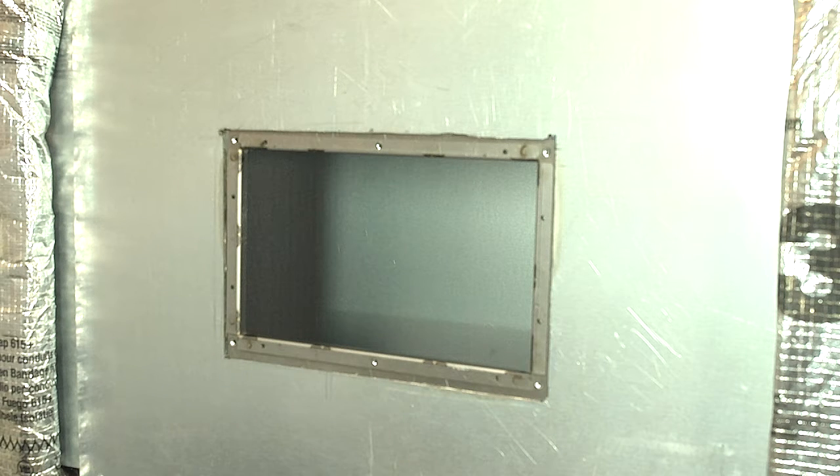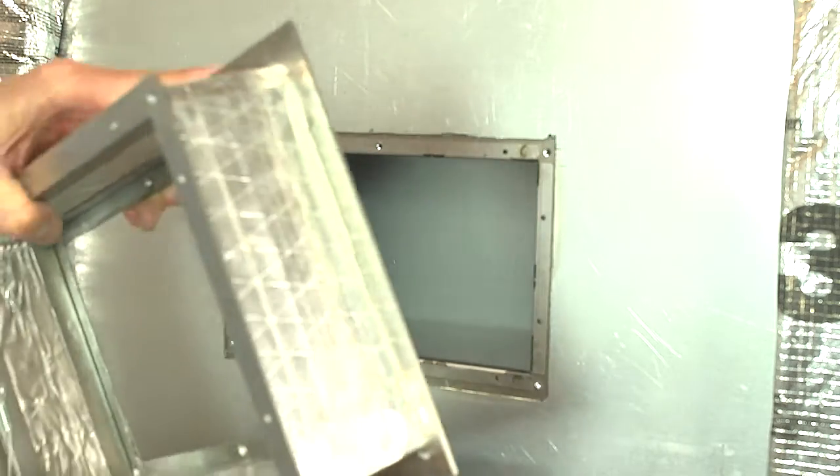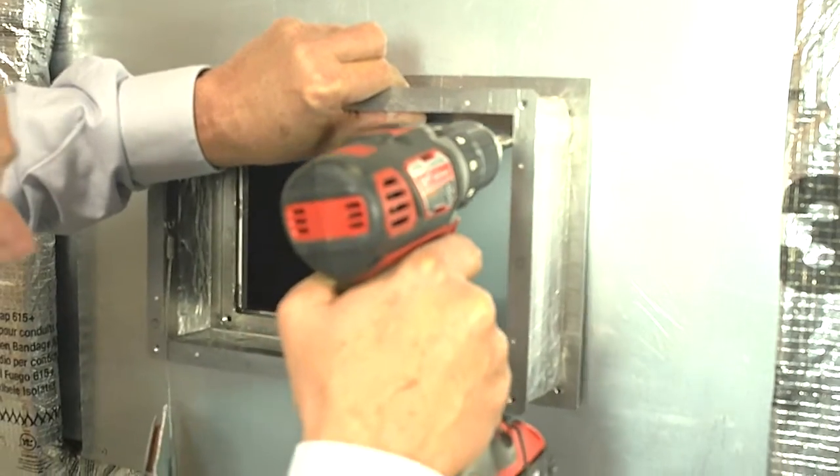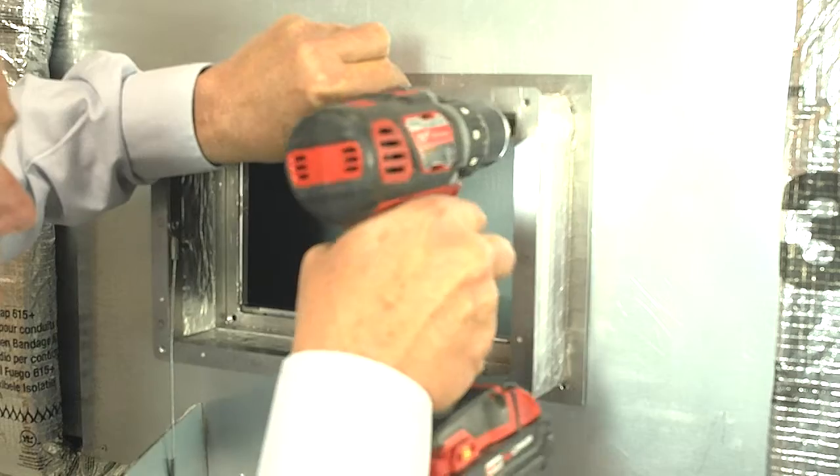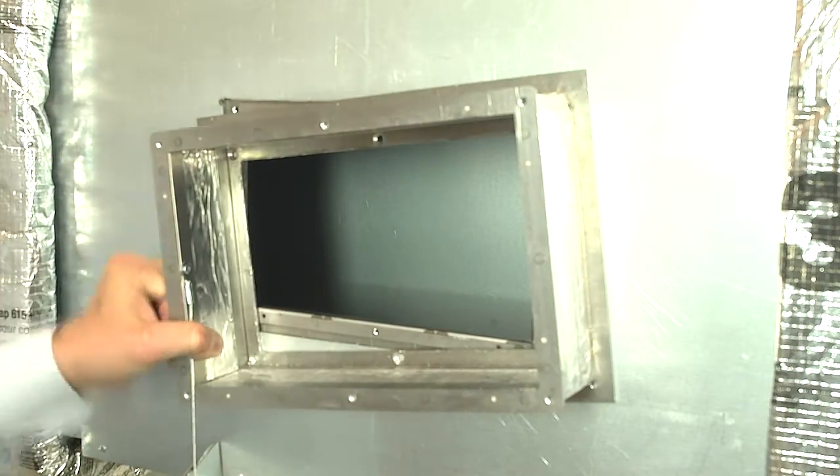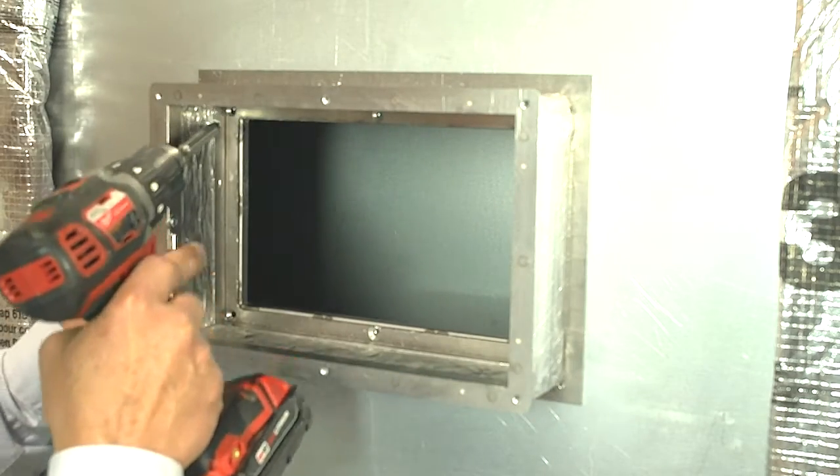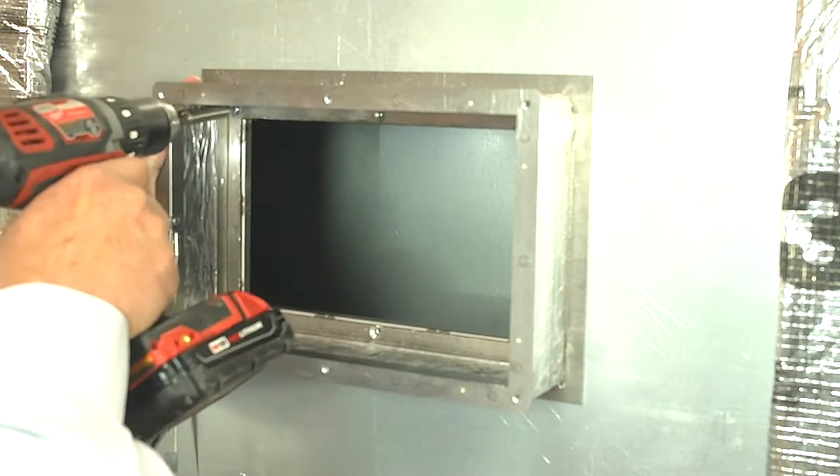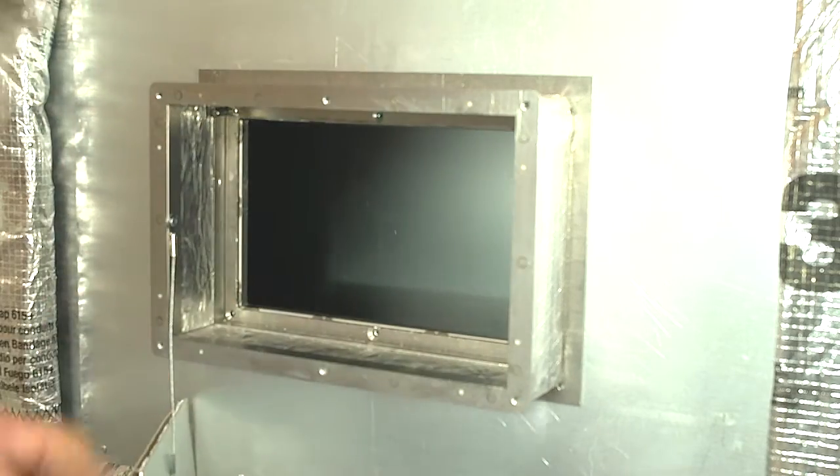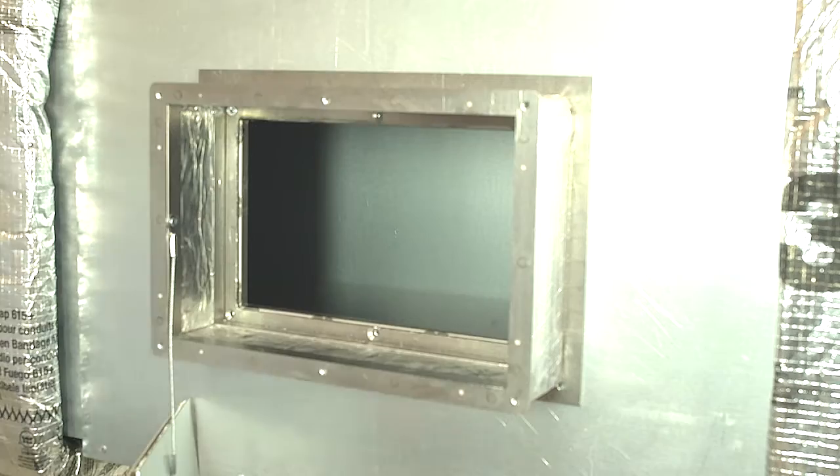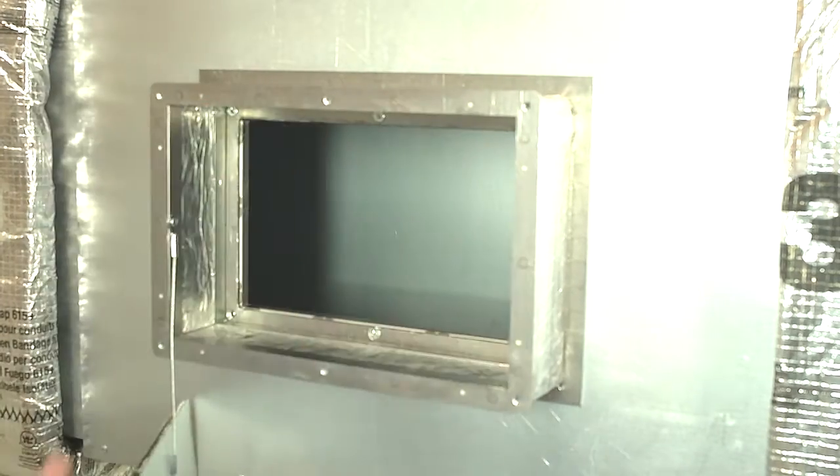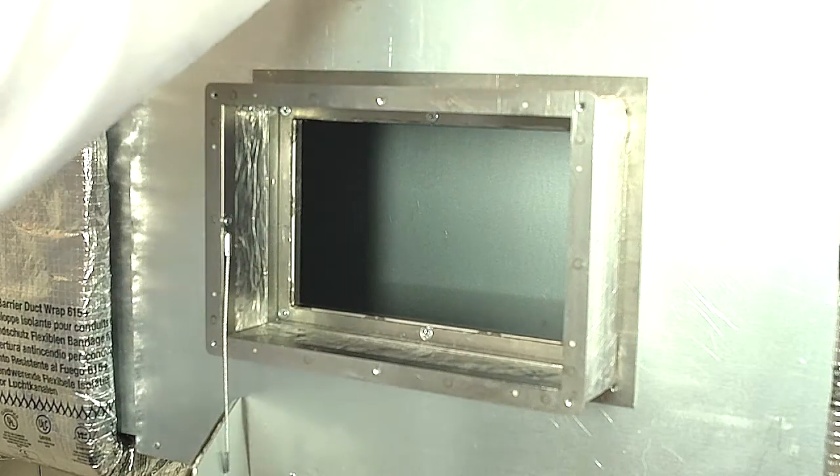We're now going to take the frame and we're going to center it over the base mounting plate. And we're screwing in through the frame into the base mounting plate, which is sandwiching the duct in between it. And there we go, the frame is all set.